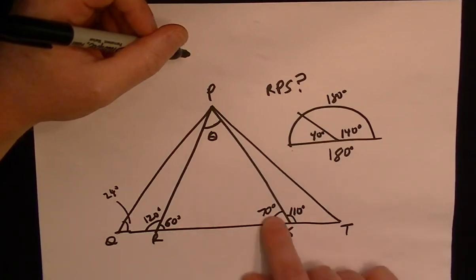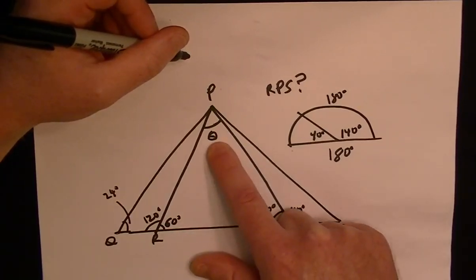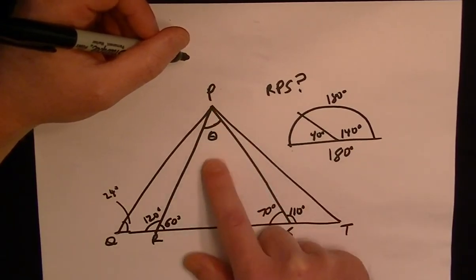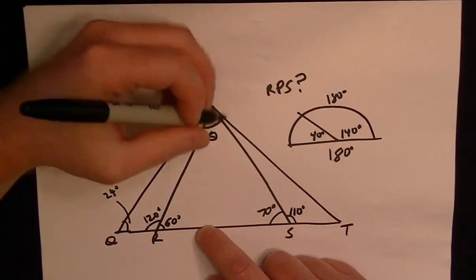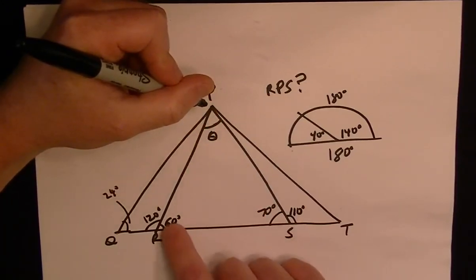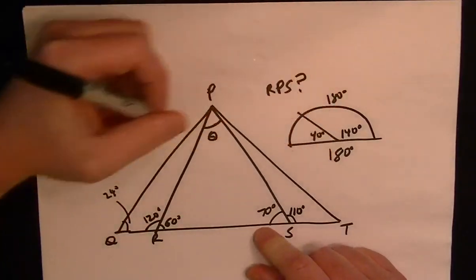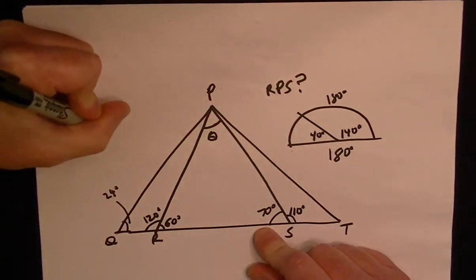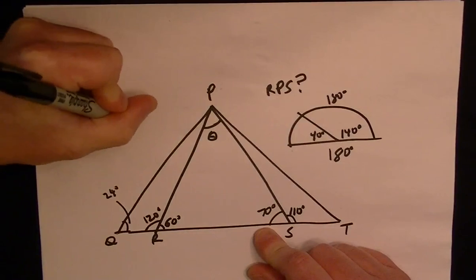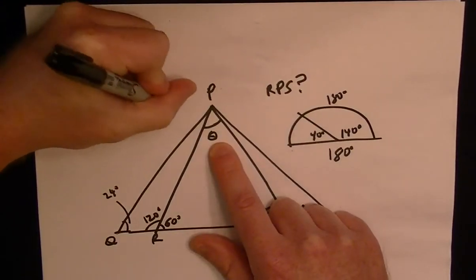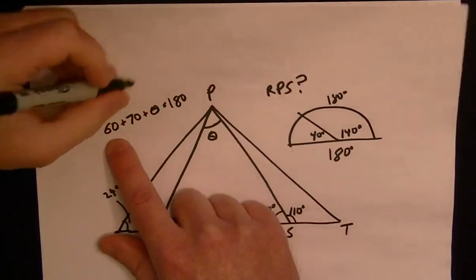So now we know the inner angles are 60 and 70, and we need to find this final angle of RPS. So the key to understand is that when you have a triangle, the angles have to add up to 180. So in this case we just have to take 60 plus 70 plus this unknown angle has to equal 180.